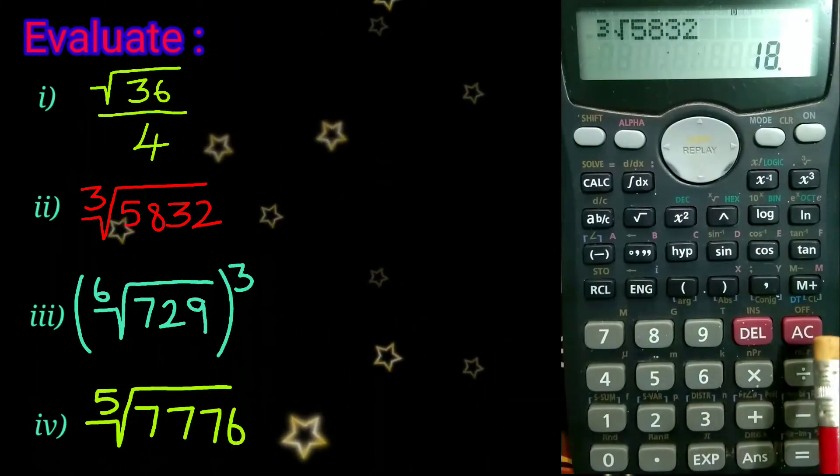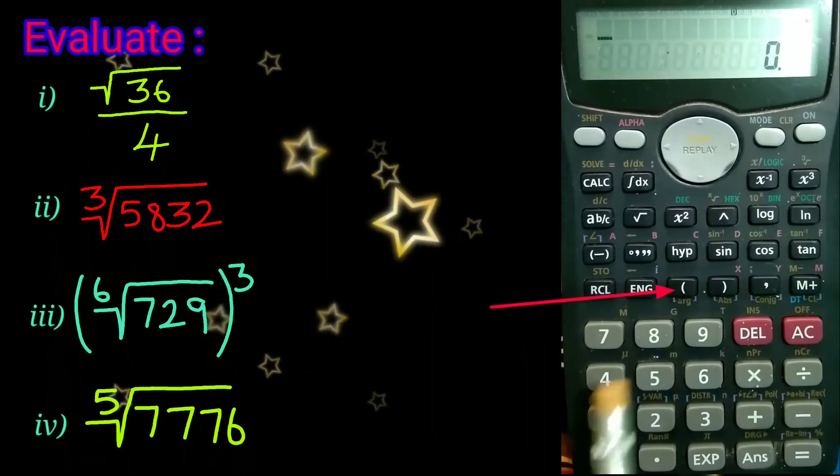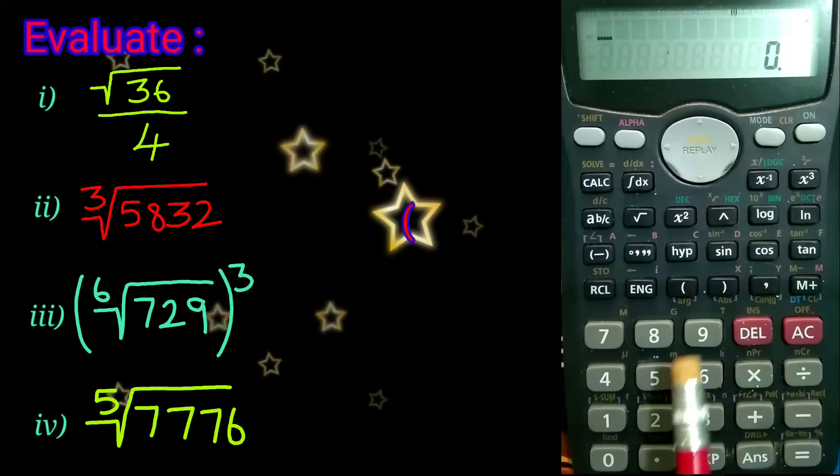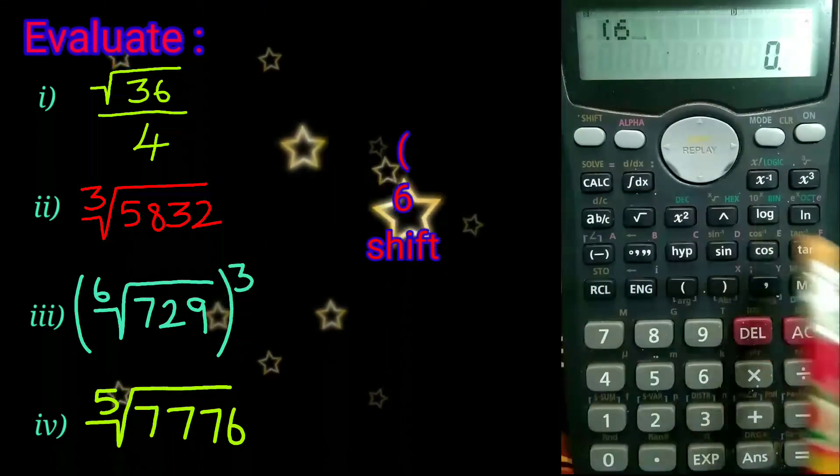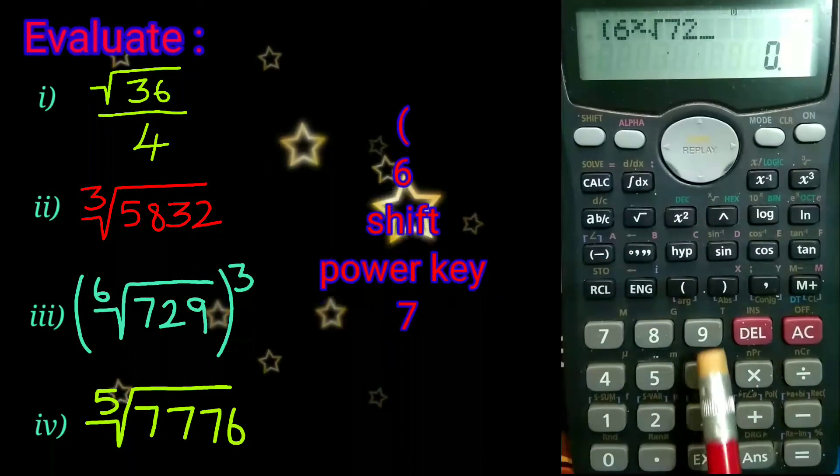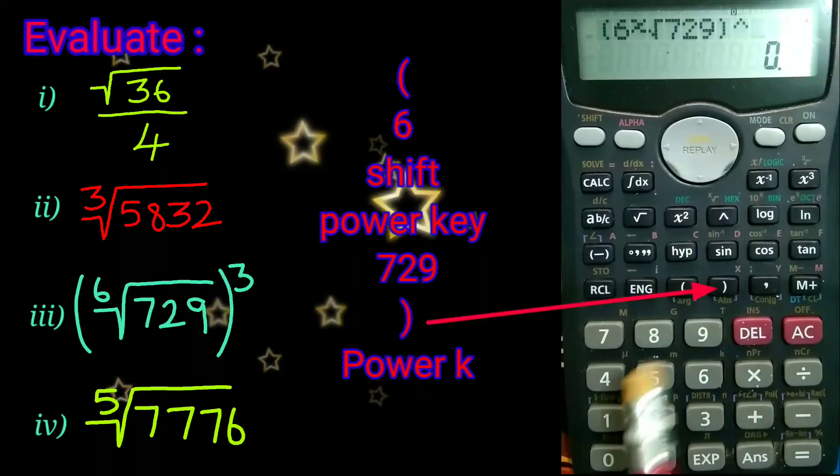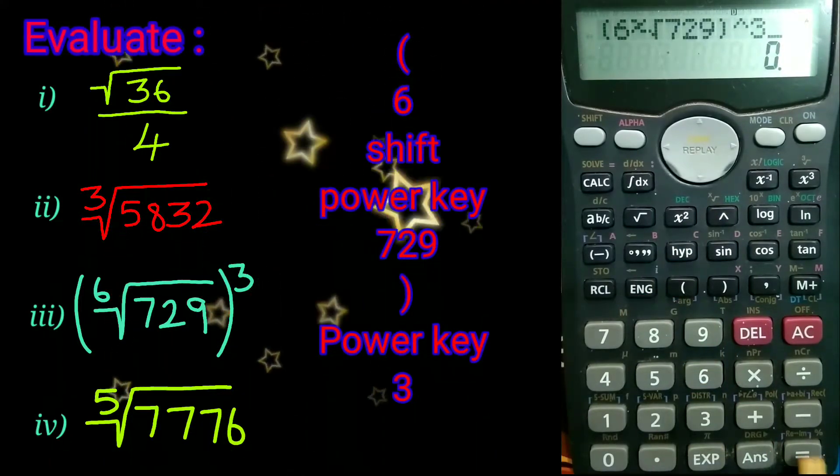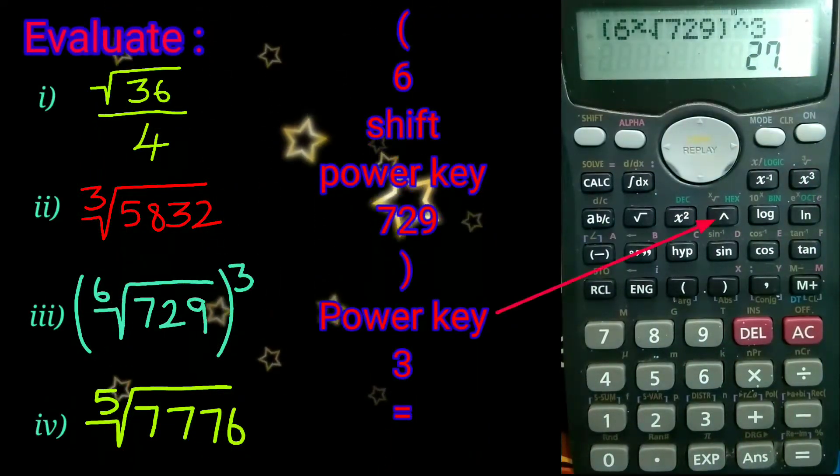Sixth root of 729 to the power 3. First, open a bracket 6, shift power key, then type 729, close the bracket, power key and 3, equal to. We have 27.